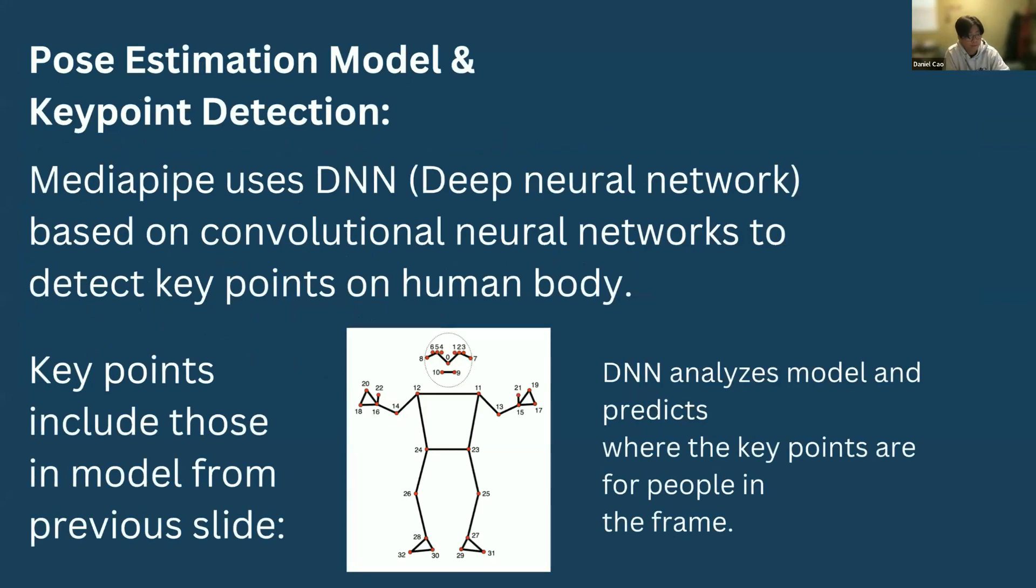Our next step involves MediaPipe's pose estimation model and key point detection. MediaPipe uses deep neural network DNN based on convolutional neural networks, CNNs, to identify key points on the human body. And these key points, including those like the eyes, face, arms and shoulders are crucial for understanding human poses. The DNN analyzes the model and predicts where the key points are located on people within the frame.